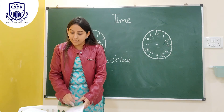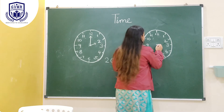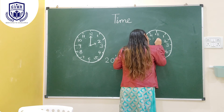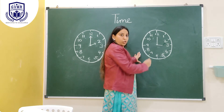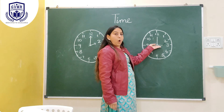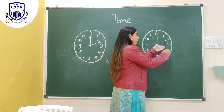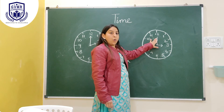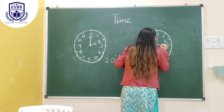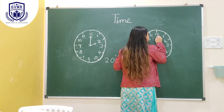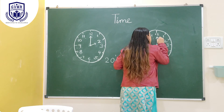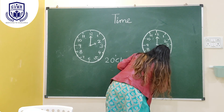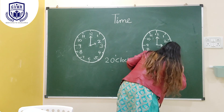Now let's do one more example. Two hands — one long and one short. The short hand points to number 3, and the long hand points to number 12. It means the time is 3 o'clock.